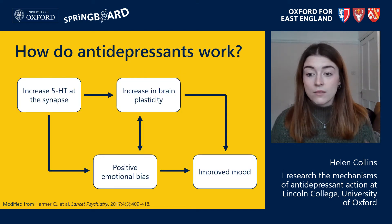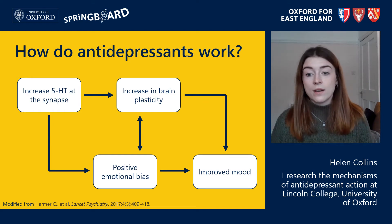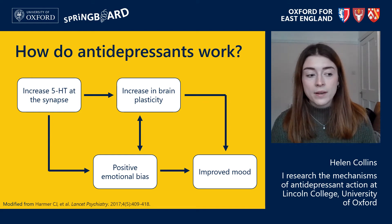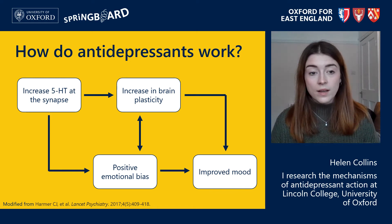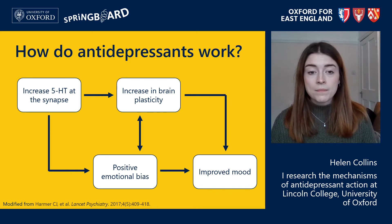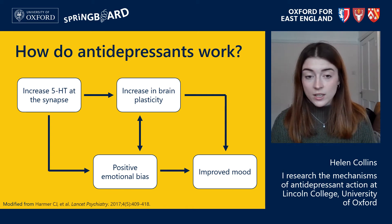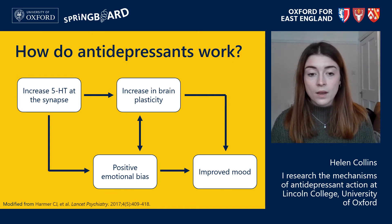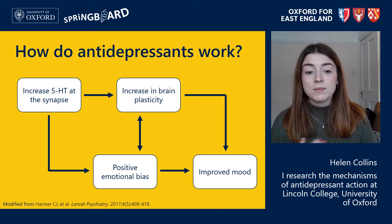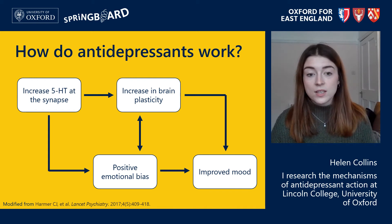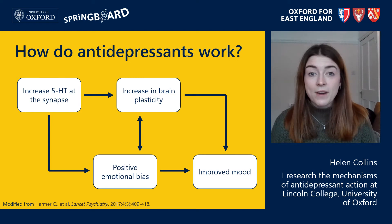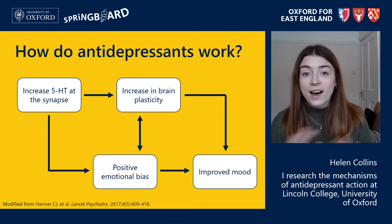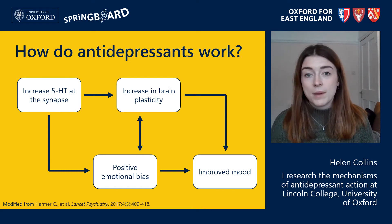These ideas work together to form our overall idea of how antidepressants work — combining the increase in plasticity with the more positive emotional bias. 5-HT increases at the synapse when you give an SSRI, and this triggers downstream cascades of gene expression which increase the plasticity of the brain. This allows us to better learn more positive emotional associations and view the world in a better light, and overall this leads to improved mood. However, this is a very idealistic view and it certainly doesn't work like this for many patients.